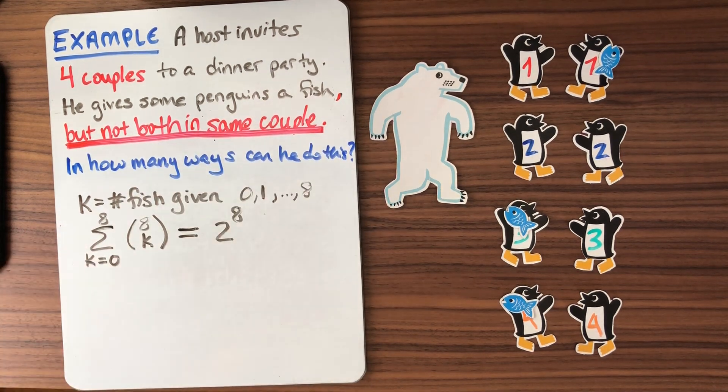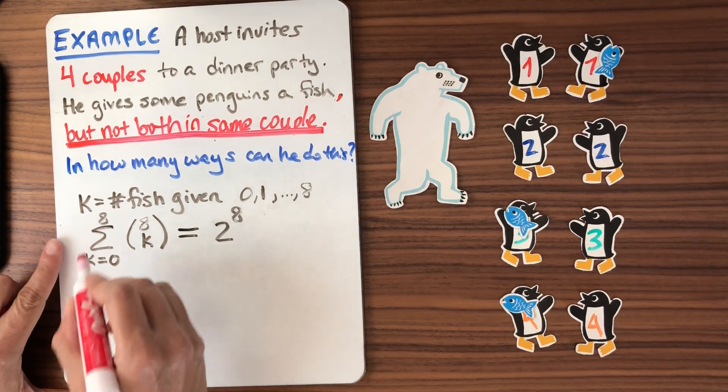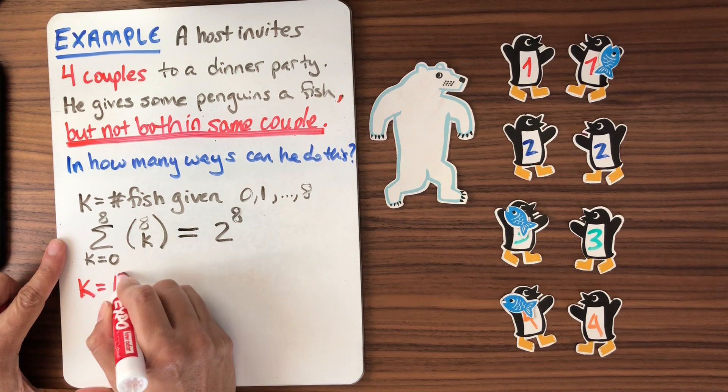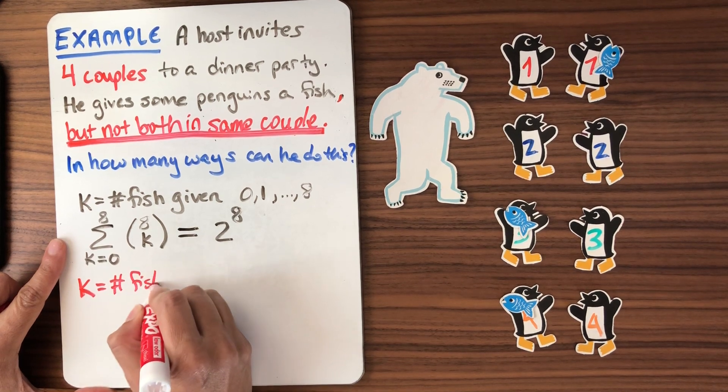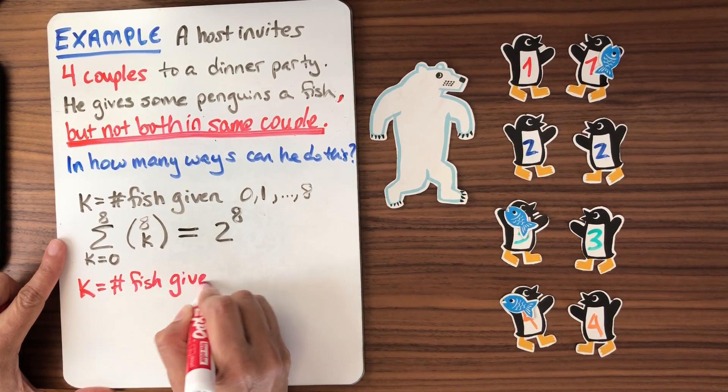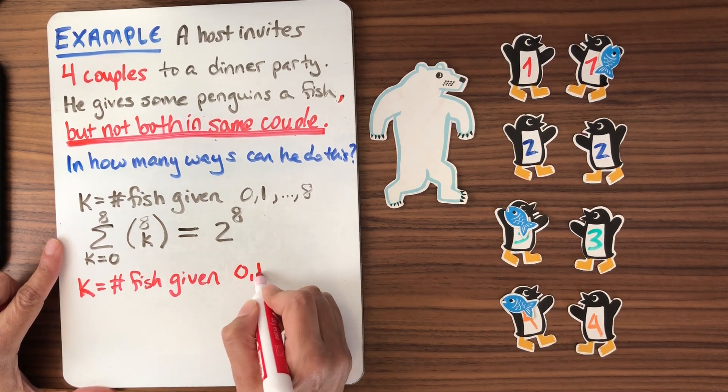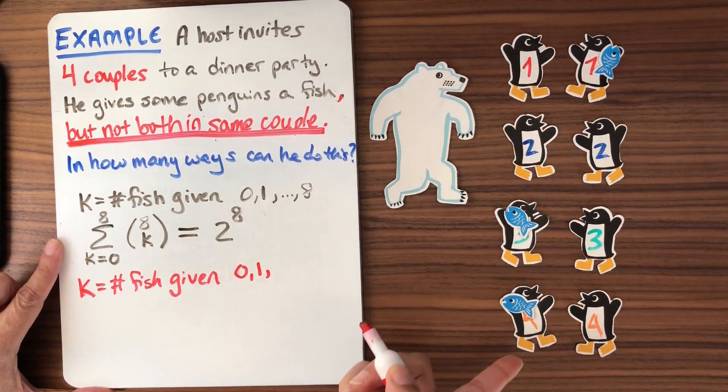Let's think about it in the same ways that we thought about this simpler case. Okay. Let's think again. K is the number of fish given. So K equals the number of fish given. And in the constrained version of the problem, he could still give zero fish, one fish. But what's the most number of fish he could give?